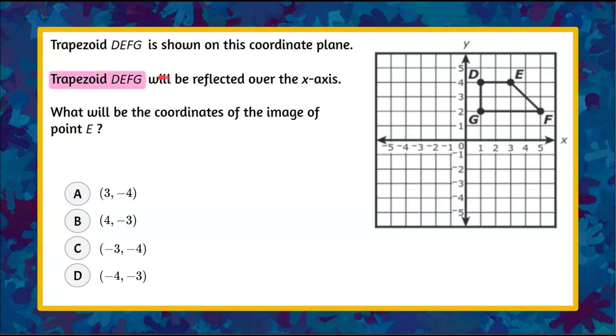Welcome back. So we have trapezoid DEFG on this coordinate plane. We need to reflect it over the x-axis right here. And then we are asked, once we do that, what are the coordinates of the image of point E right here?